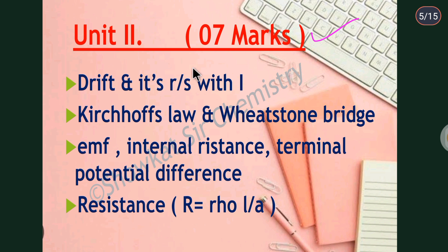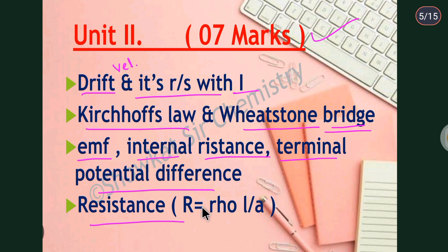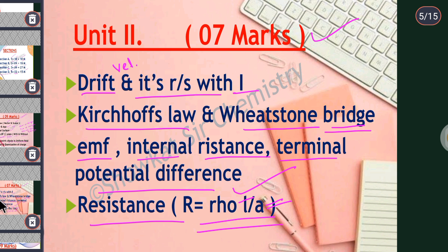Moving to Unit 2, which carries 7 marks. First, drift velocity and its relationship with current — you should actually derive this. Then Kirchhoff's laws and the Wheatstone bridge, which is very important. Similarly, electromotive force, internal resistance, and terminal potential difference. Also, resistance R = ρl/A — basic numerical questions are always asked from this, such as what happens to resistance if you increase the length or change the area of a wire.